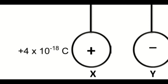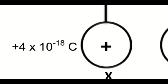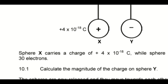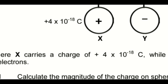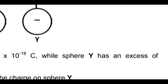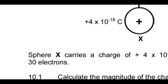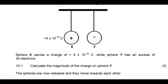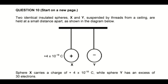Sphere X carries a charge of positive 4 multiplied by 10 to the power of minus 18 coulombs, while sphere Y has an excess of 30 electrons. Before we attempt the questions, let us write down a few takeaways from reading that entire statement.